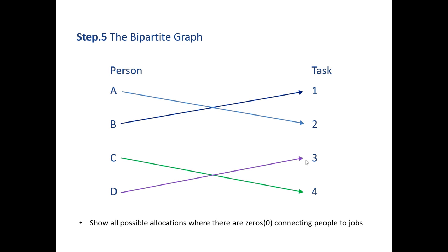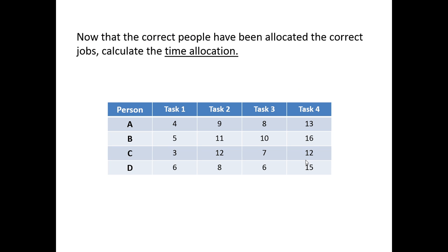Person A does task 2, B does task 1, C does task 4, and D does task 3. We look back at our original allocations from the very first table and we can see the times allocated for each particular job.